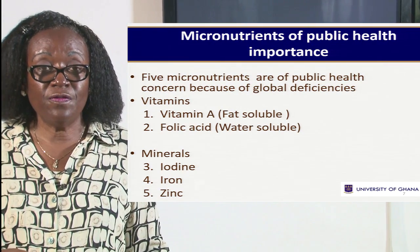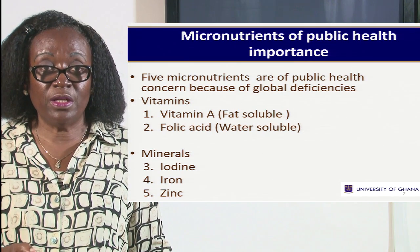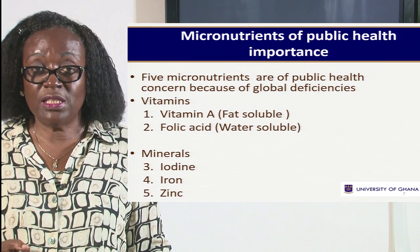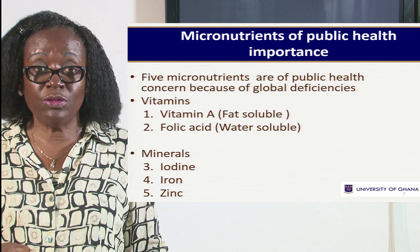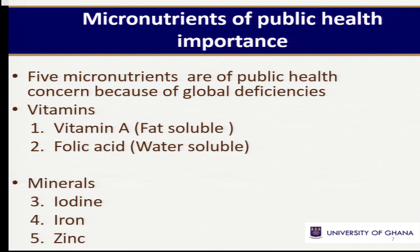The five micronutrients of public health importance globally are: vitamin A, which is a fat soluble vitamin; folic acid, which is a water soluble vitamin — these are the two vitamins of public health importance. And then we have three minerals, which are basically trace elements: iodine, iron, and zinc.